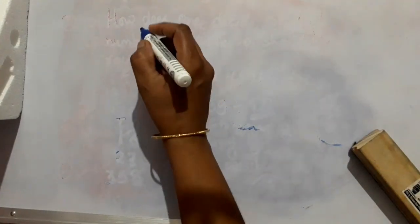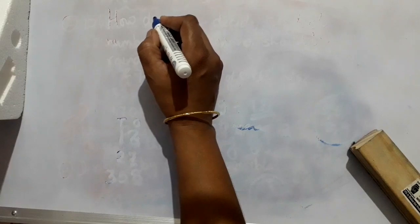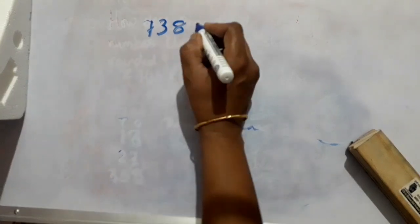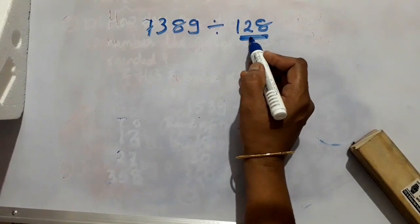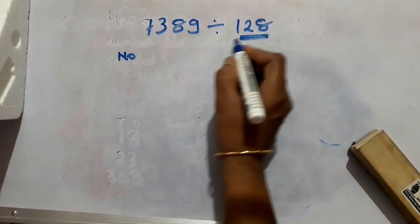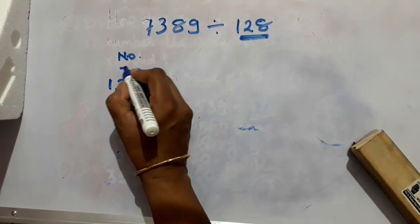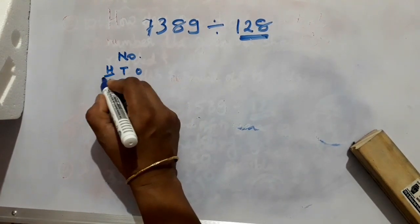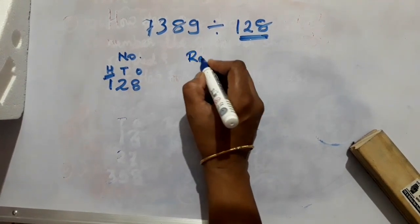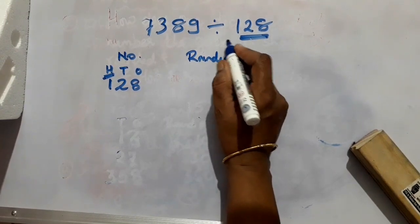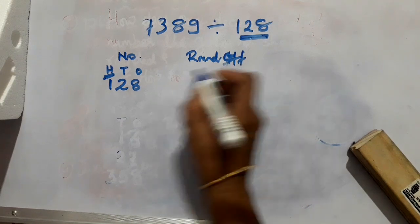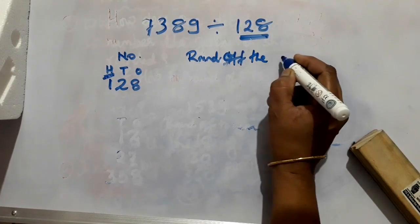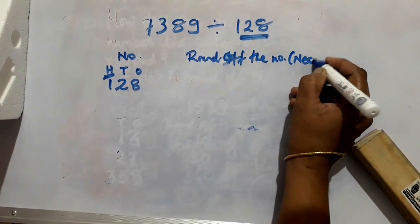Now say you want to round off to the nearest 100. For example, 7389 divided by 128 — here the divisor is a 3-digit number. This is the 1's place, 10's place, and 100's place. So you are going to round off the number to the nearest 100. Remember that you have to round off to the highest place, and here the highest place is 100.